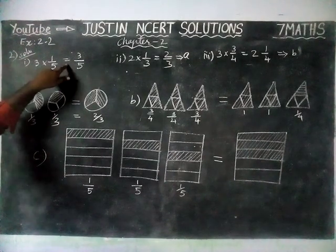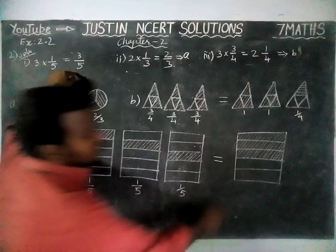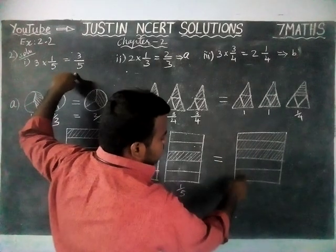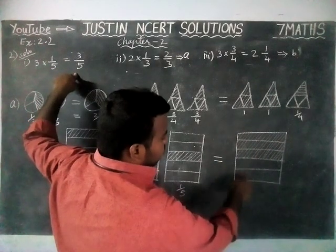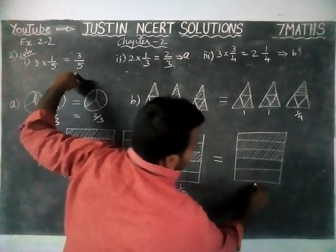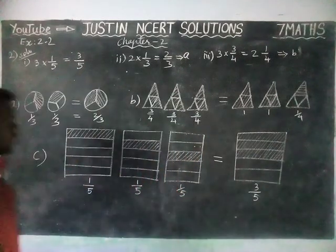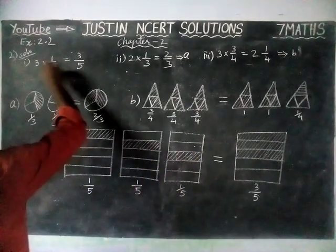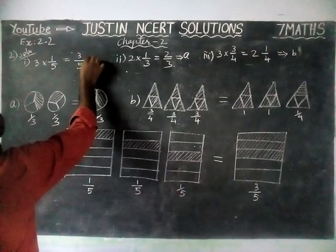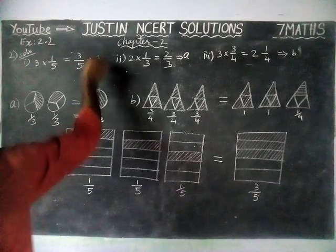So three into one by five is equal to three by five. Here, one, two, three, four, five is there — out of five, three parts are added, so three by five. So the correct answer for the first Roman numeral is equal to Option C.